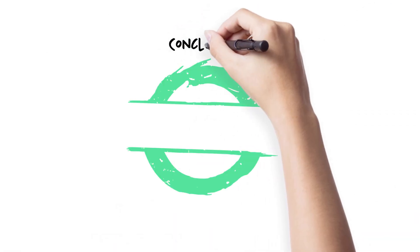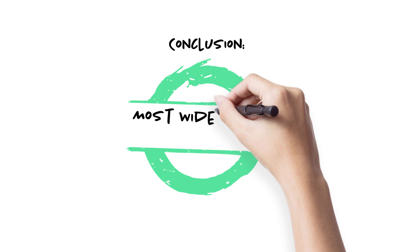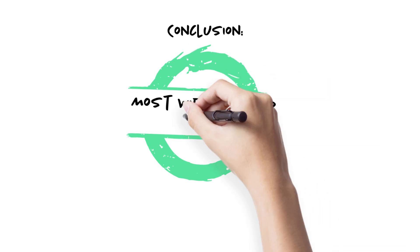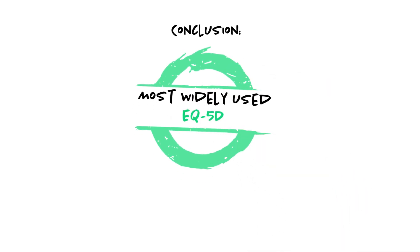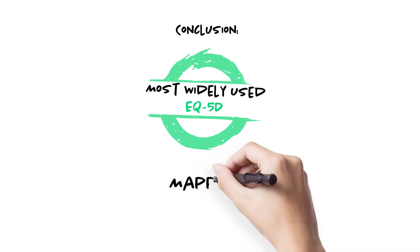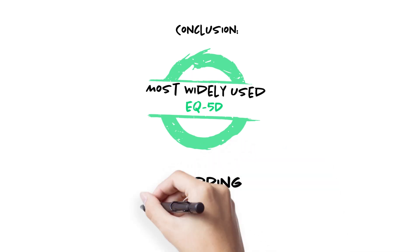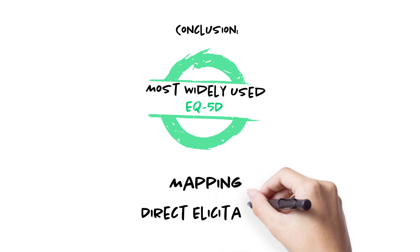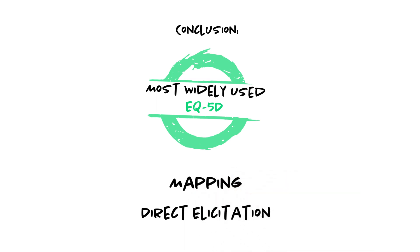To conclude, EQ5D is now the most widely used method to obtain utilities for the estimation of QALYs. Whenever the collection of EQ5D data is not feasible or appropriate, other approaches such as mapping or direct elicitation may be considered.